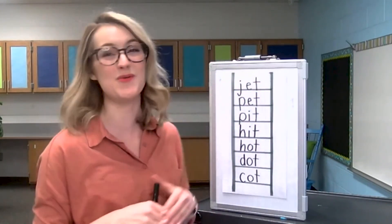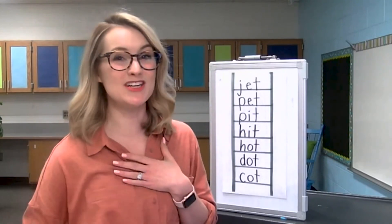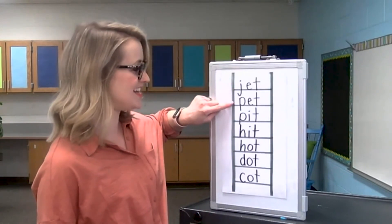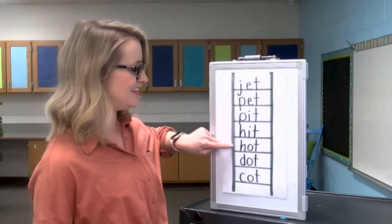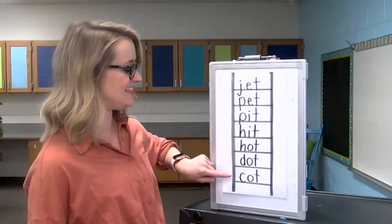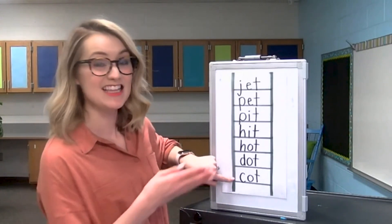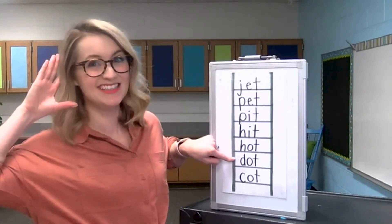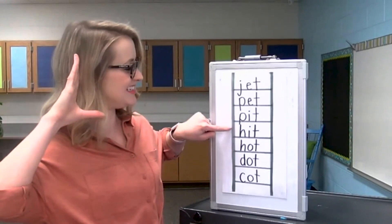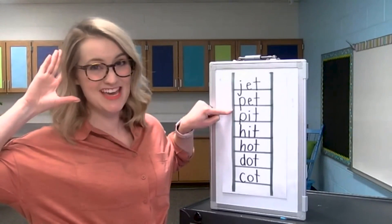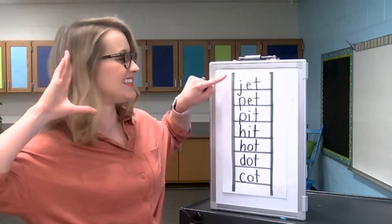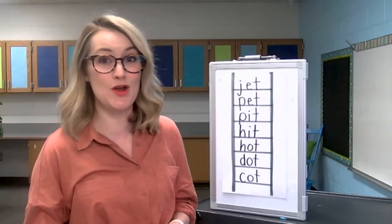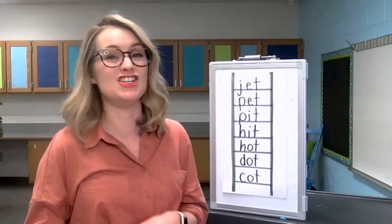You made it all the way to the top of our word ladder. Now let's practice our words. I'm going to read the words first and then it will be your turn to read them. Let's start at the top: jet, pet, pit, hit, hot, dot, cot. Now it's your turn — let's start at the bottom. As I point, you read the word: cot, dot, hot, hit, pit, pet, jet. Wow, you did it! Wonderful job. You can read these words to someone at home. We built a word ladder today by changing just one letter at a time.